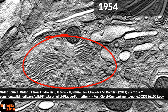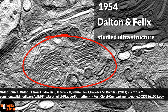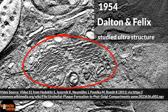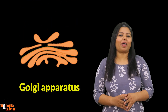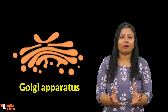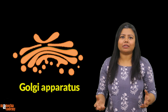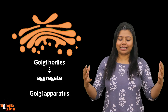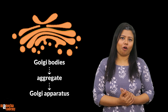In 1954, Dalton and Felix studied the ultra structure of Golgi bodies under the electron microscope. The Golgi bodies, or Golgi apparatus, consists of smaller Golgi structures that come together in certain cells of animals to form an apparatus — an organized structure. Basically, the Golgi apparatus is made up of several different types of Golgi bodies that come together in a certain aggregate and get arranged to form the Golgi apparatus.